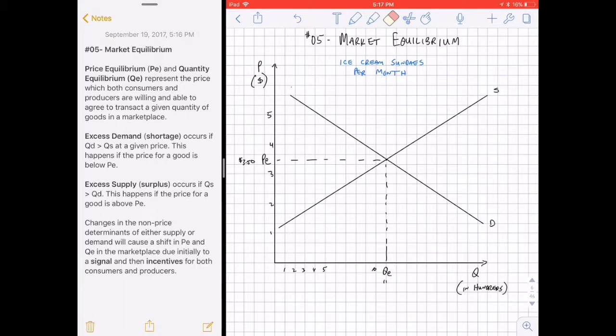In this case I am using data from my classes where they found that given the variables I had set up, the equilibrium price for an ice cream sundae is somewhere around $3.50. I have the price on the vertical axis in US dollars. On the horizontal axis, 1100 ice cream sundaes being bought and sold at that price per month.